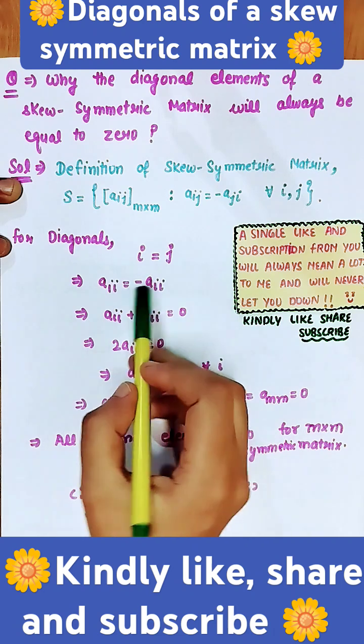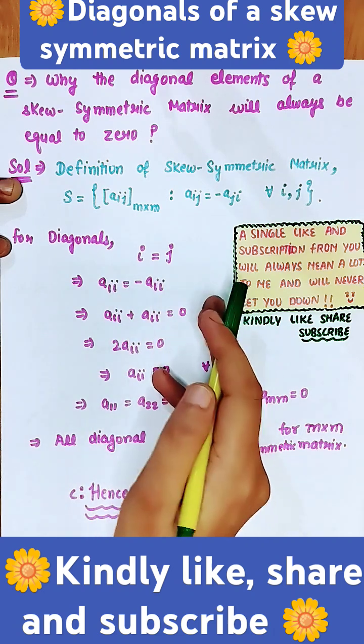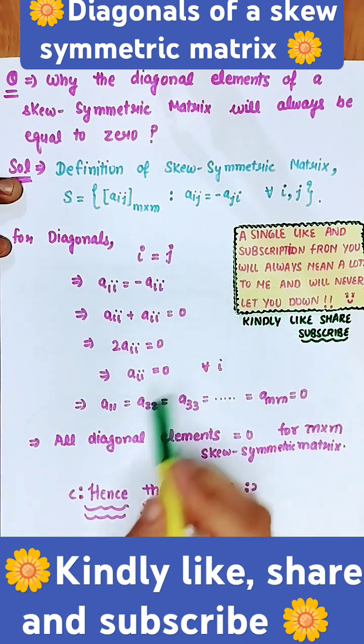We can also say that if a number equals its own negative value, that means the number should be equal to 0, which implies that all diagonal elements equal 0.